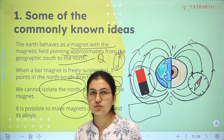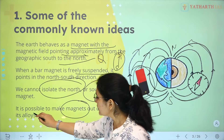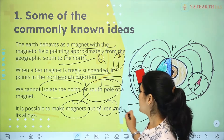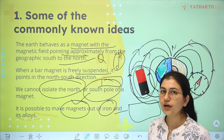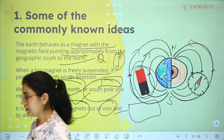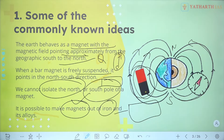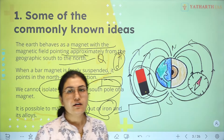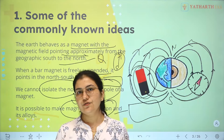Electromagnetic induction is one such process, which we will talk about later. This means it is possible to make a magnet out of iron and its alloys. Iron and its alloys — such as carbon mixed with iron — can be used to create artificial magnets.